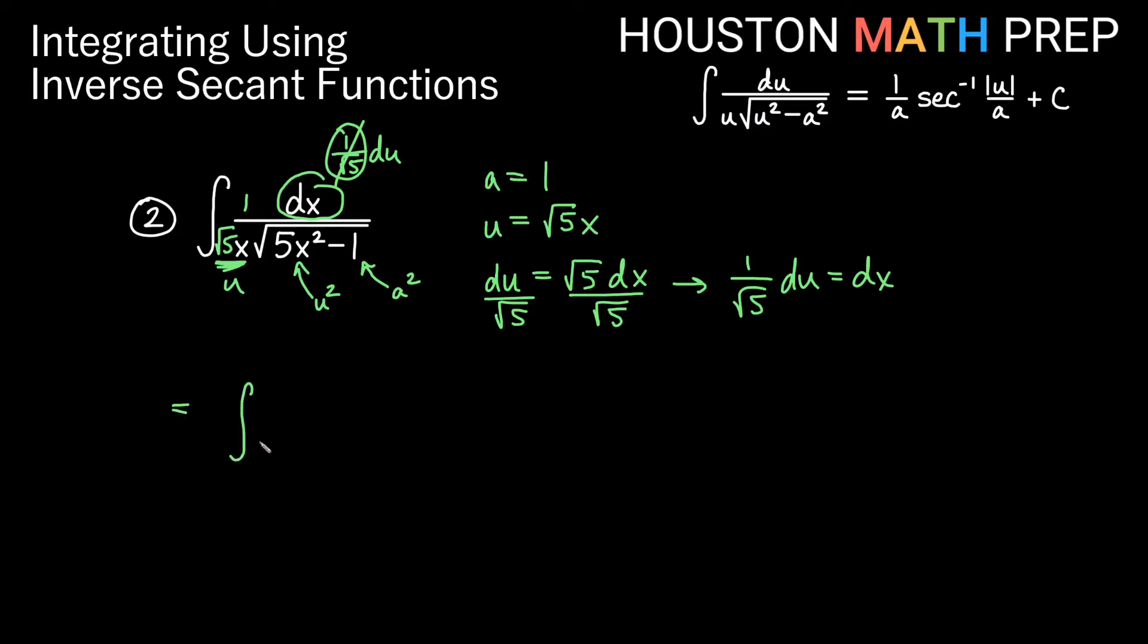So for this one, we'll go ahead and say the integral of du over u times the square root of u squared minus a squared. And that's the exact formula. So we write down our exact formula 1 over a inverse secant of u over a plus c.